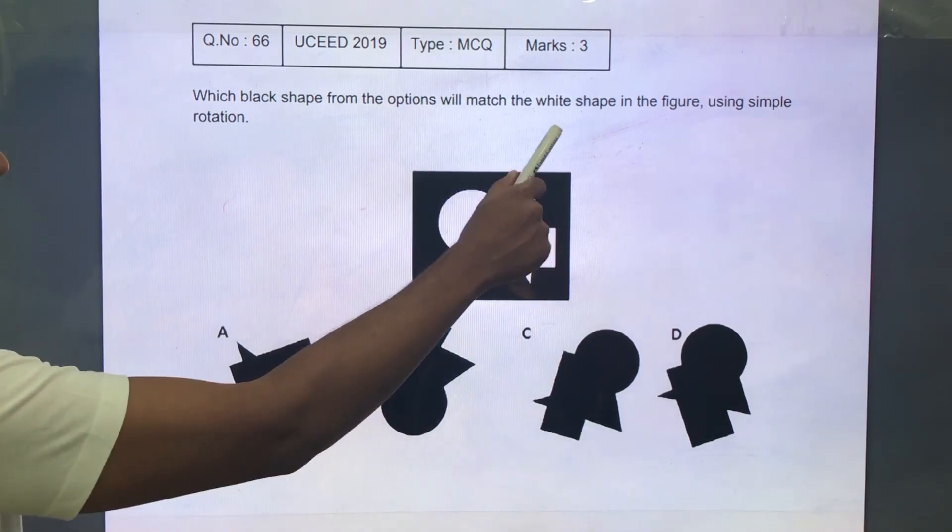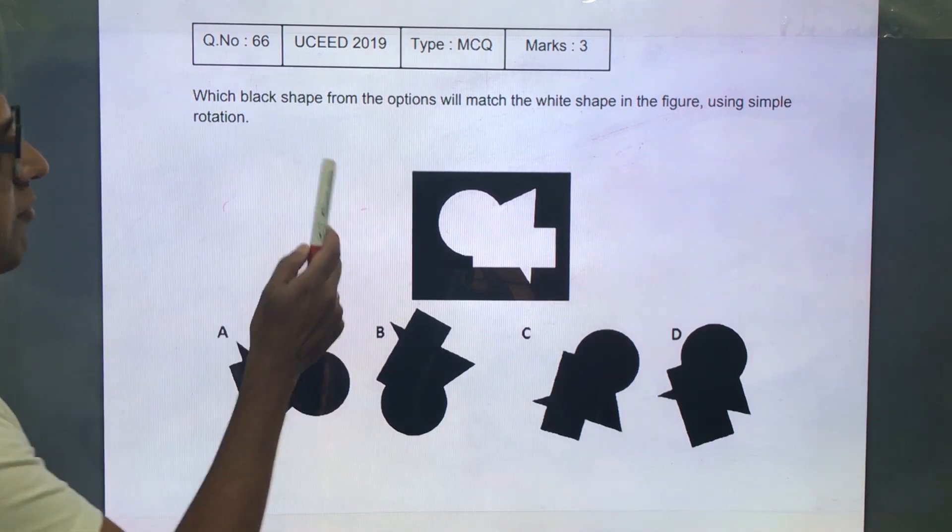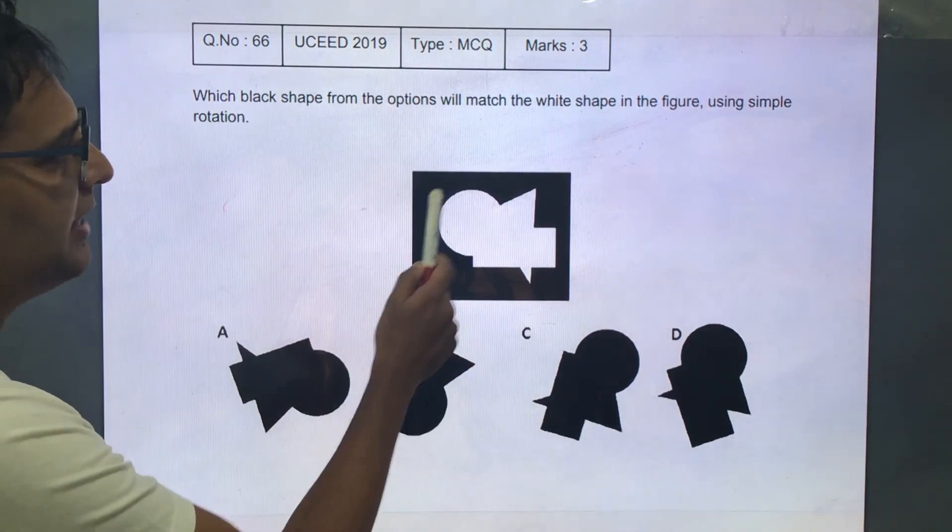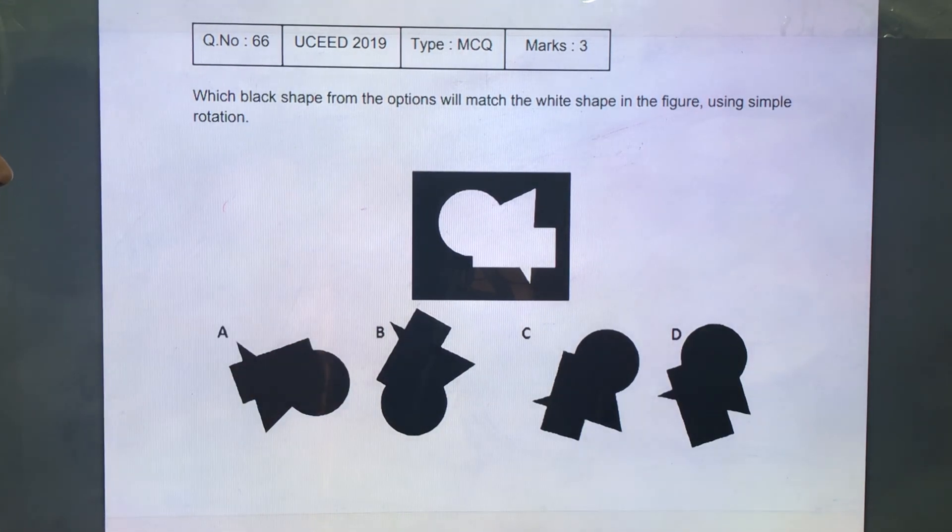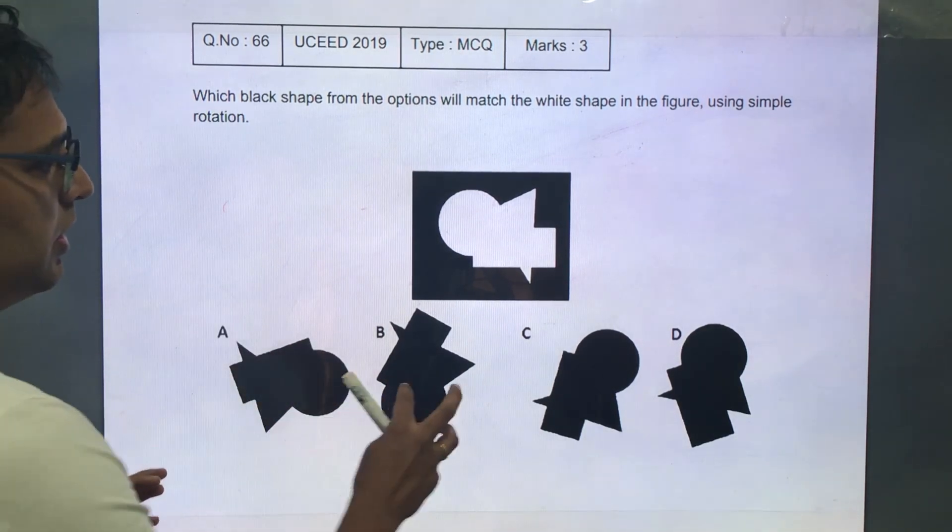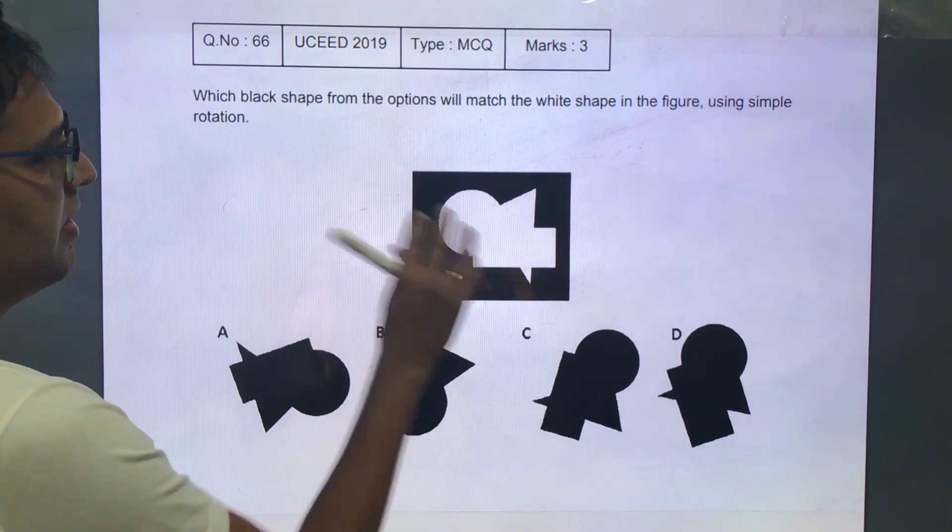This is a MCQ type question for 3 marks from UCEED 2019. Which black shape from the options will match the white shape in the figure using simple rotation? Basically we have to match these shapes with the white shape or the gap which is given here.